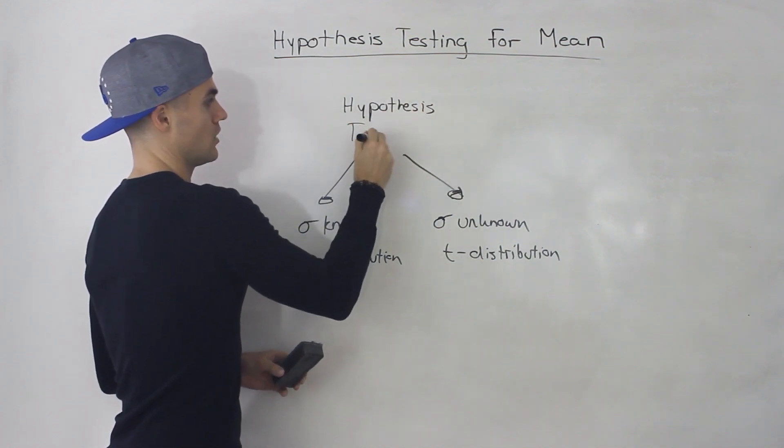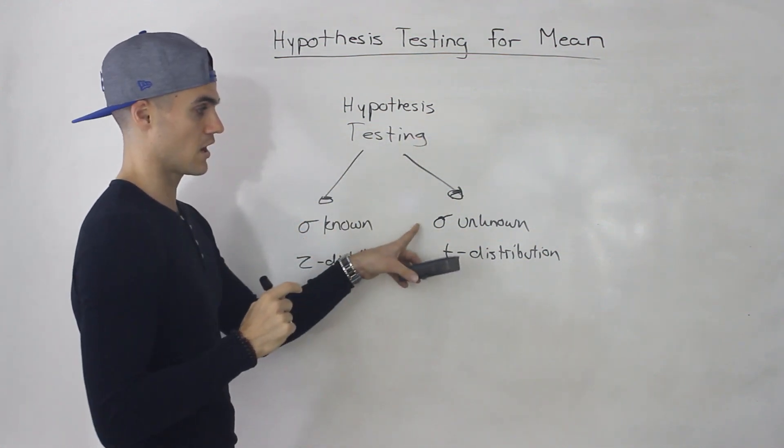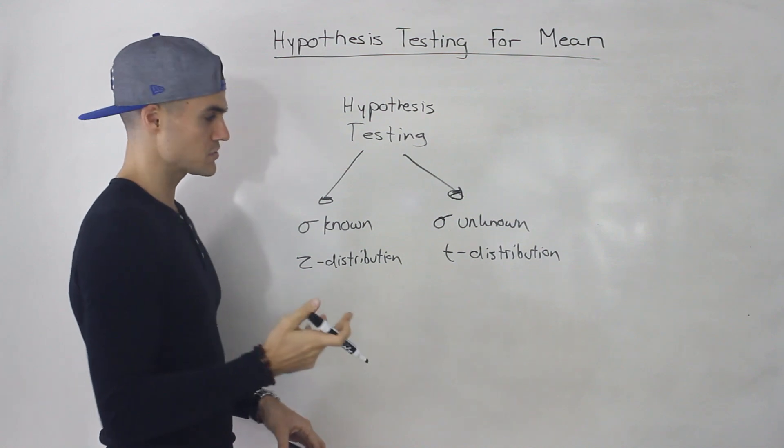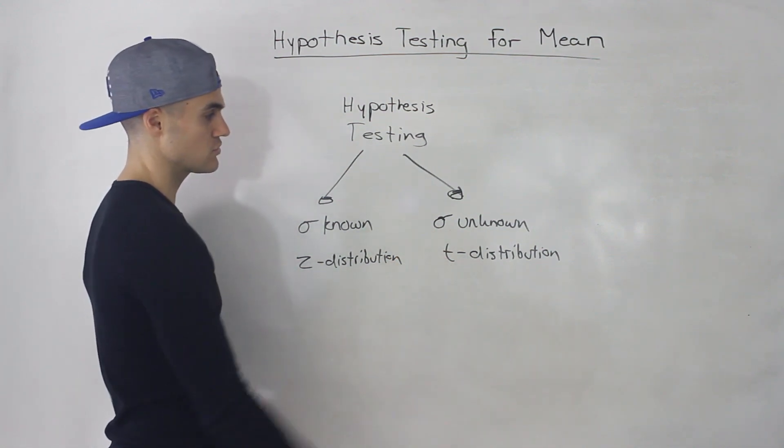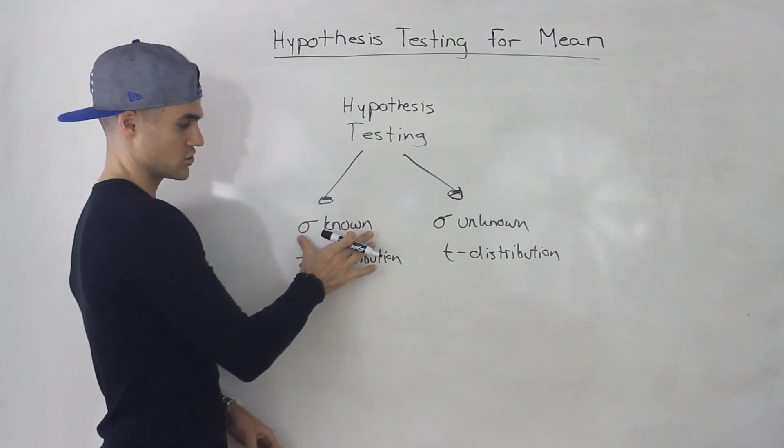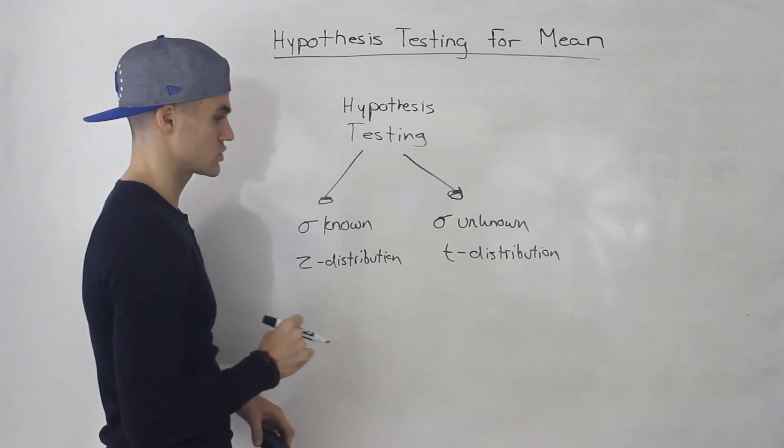So you're either going to know, in the question, the population standard deviation is going to be given or it's not going to be given. Now, most cases, most questions are going to be based on this. You're going to have to use a T distribution, but some questions you will get the population standard deviation being known. You're going to have to use the Z distribution.